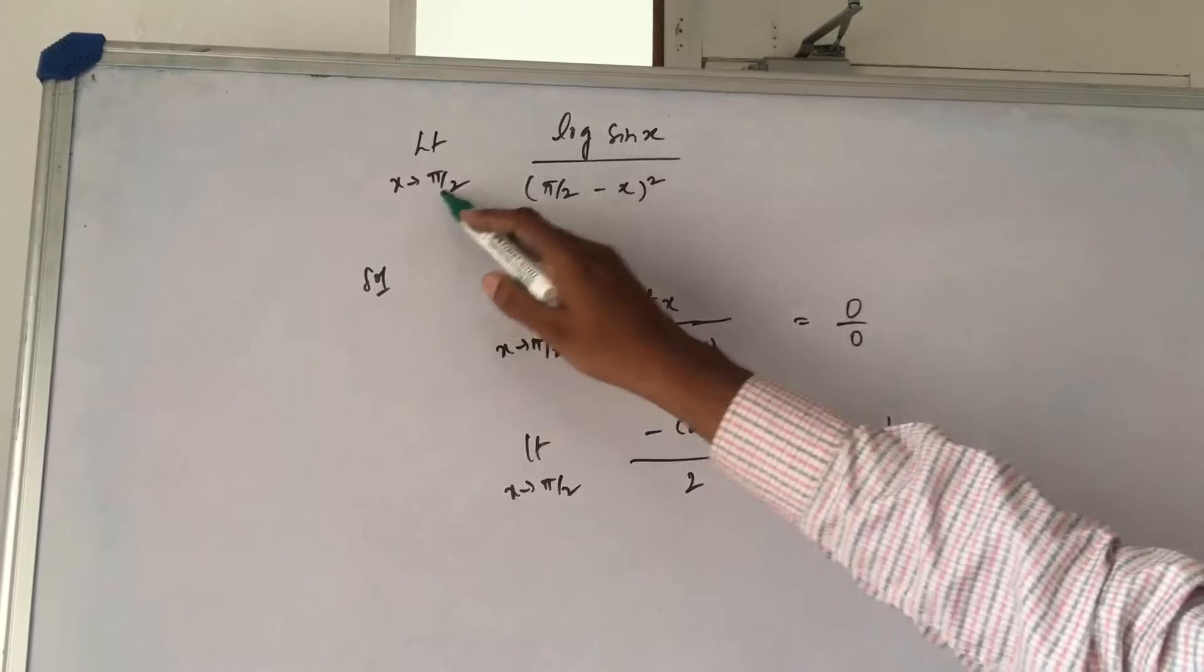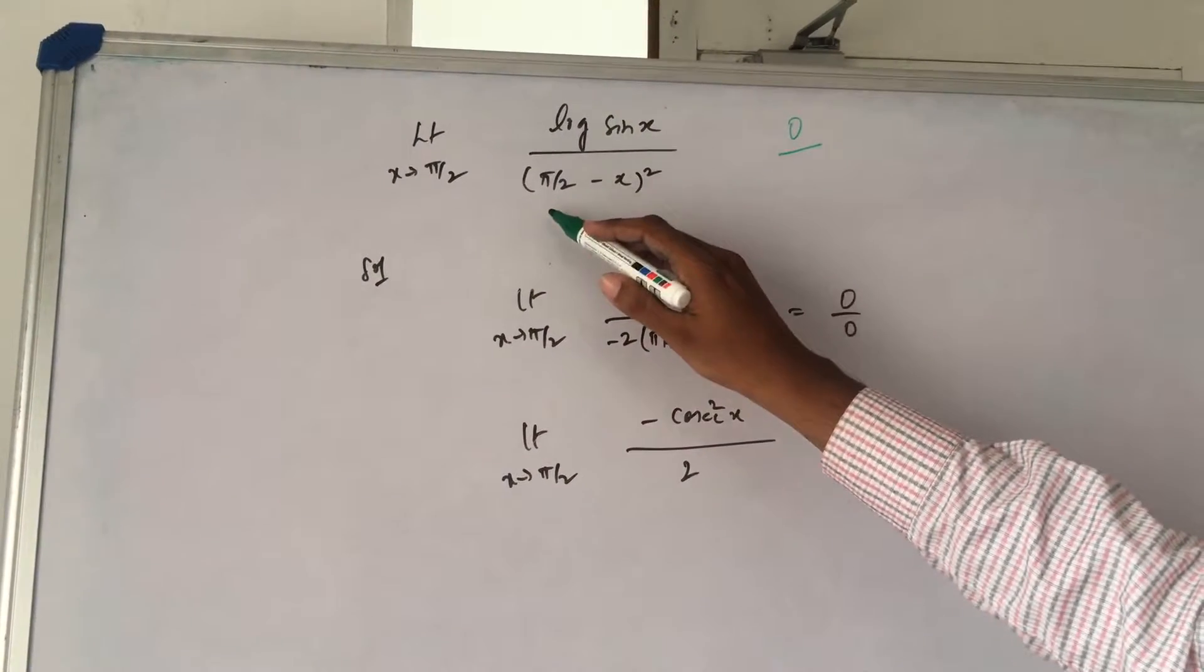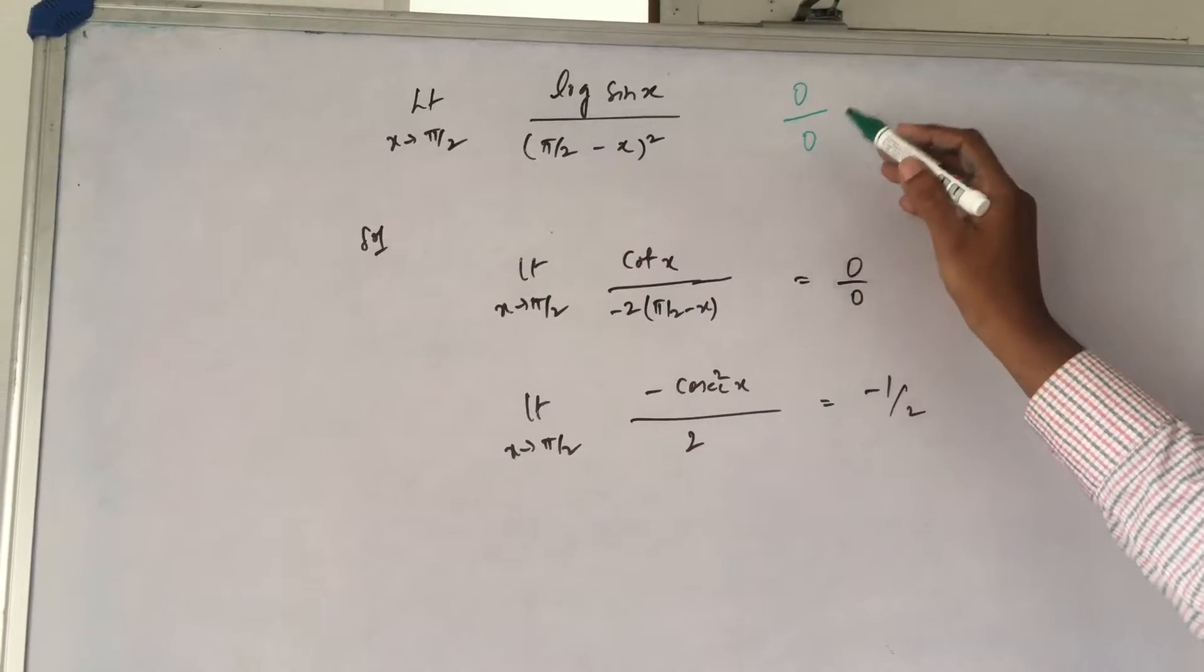Now if I put x as π/2 in the numerator, this becomes 0, and if I put x equal to π/2, this also becomes 0. So this is indeterminate.